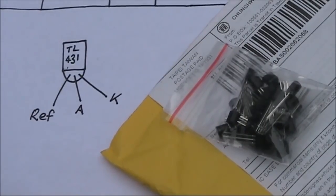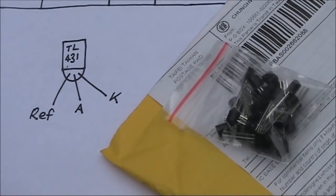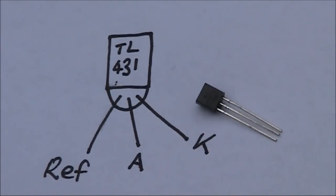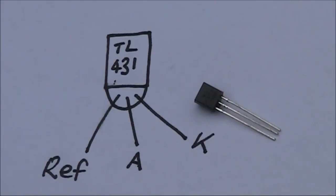Let me introduce you to the TL431 voltage regulator. Looking just like a small signal transistor, its leads are different: anode, cathode and reference, instead of collector, emitter and base.